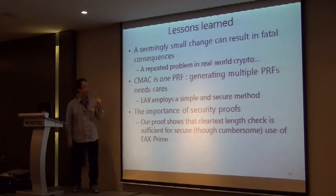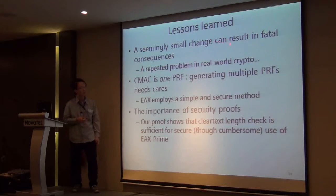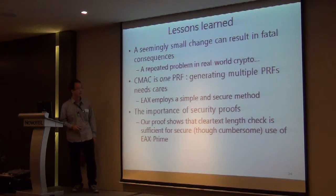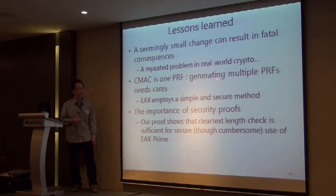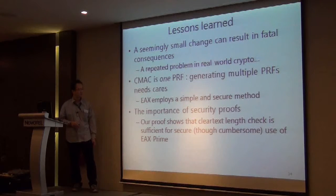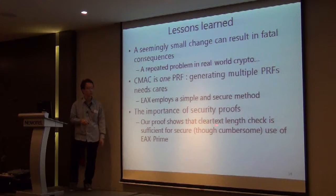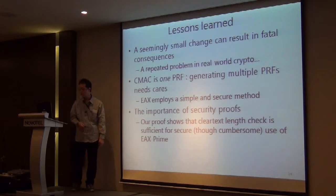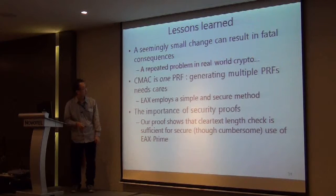I'd like to finish with the lessons learned. First, a seemingly small change can result in fatal consequences — this is a recurring problem in real-world cryptography. Second, CMAC is one PRF, so generating multiple PRFs from one CMAC function is sometimes dangerous and requires care. In that respect, EAX prime employed a method that turned out to be insecure. Third, the importance of security proofs: our proof showed that a cleartext length check is sufficient for secure implementation of EAX prime. Thank you.